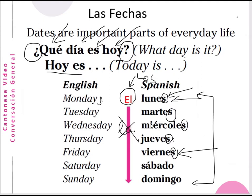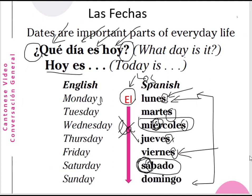Note that miércoles and sábado have accent marks — an accent above the 'e' in miércoles and above the first 'a' in sábado. The accent tells you which syllable to stress. So you say 'miércoles,' not 'miercoles'; and 'sábado,' not 'sabado.' When there is an accent over a vowel, that syllable is stressed. Otherwise the stress falls on the second-to-last syllable — for example, 'lunes' is stressed on the first syllable.